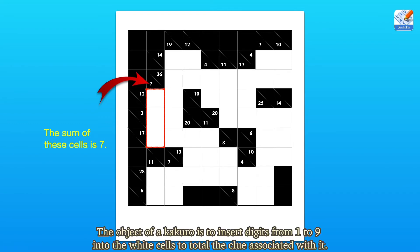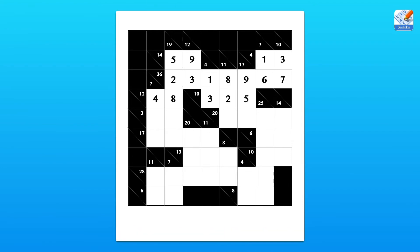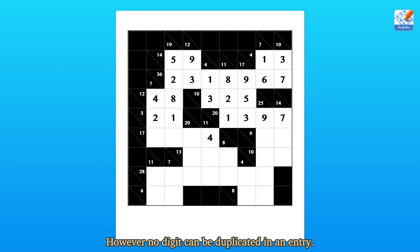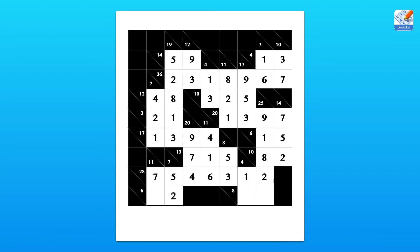The object of a kakuro is to insert digits from 1 to 9 into the white cells to total the clue associated with it. However, no digit can be duplicated in an entry. For example, for a total of 6 you could have 1 and 5, or 2 and 4, but not 3 and 3.